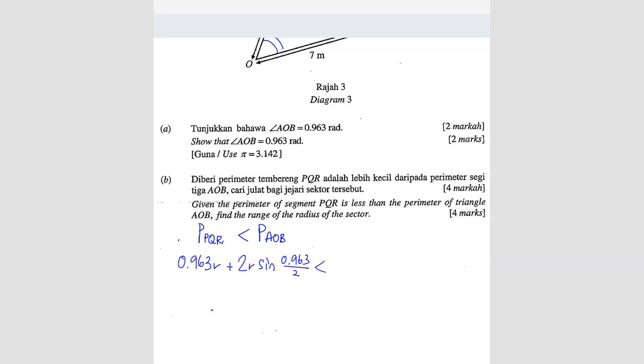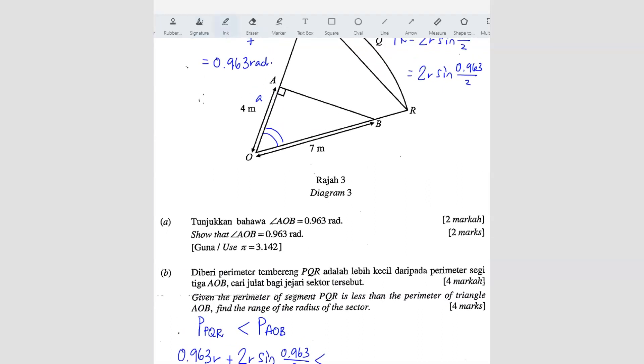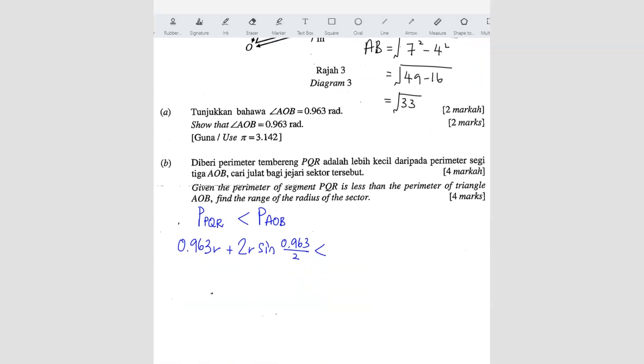So where is AOB? AOB is this triangle here. We know these two lengths already, we just need to find this. That length we can use Pythagoras theorem. So AB equals square root of 7 squared minus 4 squared, which is square root of 49 minus 16, so you get square root 33. We're going to add them all together, so we've got 4 plus 7 plus square root 33.